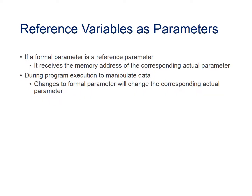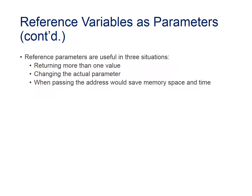A reference parameter is a formal parameter that receives both the location — the memory address — of the corresponding actual parameter. During program execution, changes to formal parameters will change the corresponding actual parameter. Reference parameters are useful in three situations: returning more than one value, changing the actual parameter, and when passing the address would save memory, space, and time.